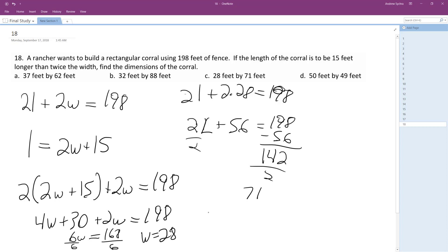All right, so length is equal to 71, and width is 28 feet. All right, let's just check it really quick. So our answer is C, 28 feet for the width, 71 feet for the length.